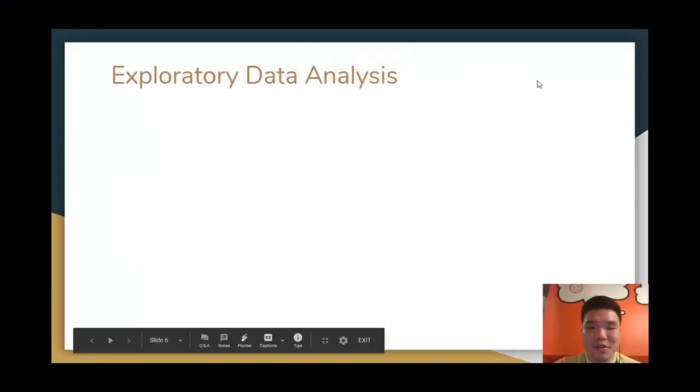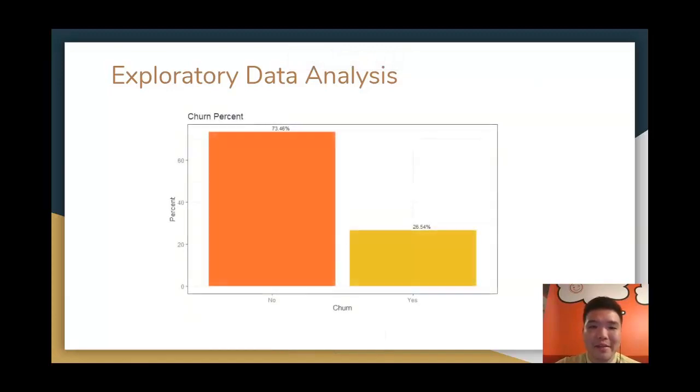After the data extractions, we are able to identify the percentage of churns. There is 73% of survivors, where there is 26% of churners.